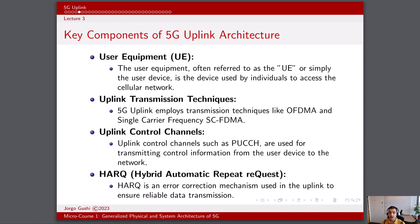OFDMA allows multiple users to share the same frequency resources, while SC-FDMA is used to mitigate the peak-to-average power ratio. We also have uplink control channels such as the physical uplink control channel, or PUCCH, which are used for transmitting control information from the user device to the network, including acknowledgements, scheduling requests, and other control signals. Finally, we have HARQ, or the Hybrid Automatic Repeat Request, which is an error correction mechanism in the uplink to ensure reliable data transmission, involving the retransmission of erroneous packets to improve data integrity and link reliability.